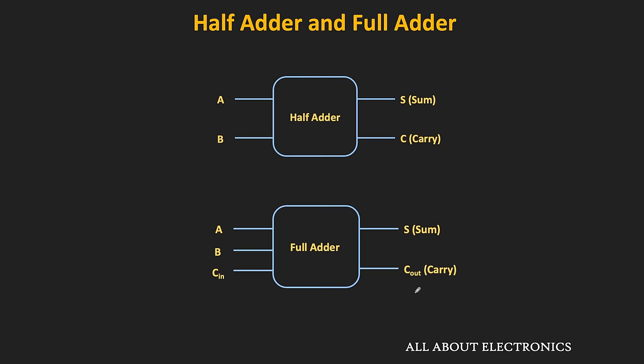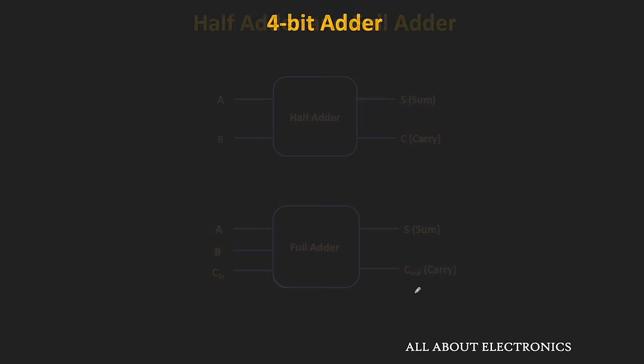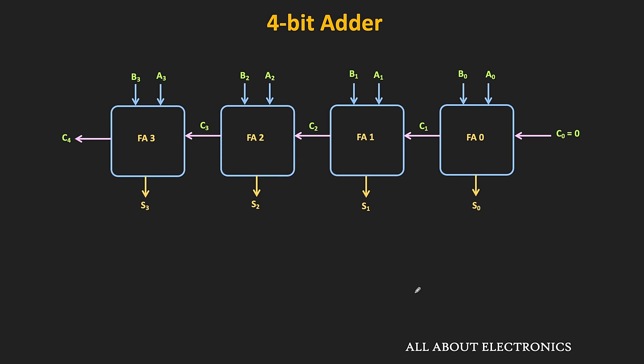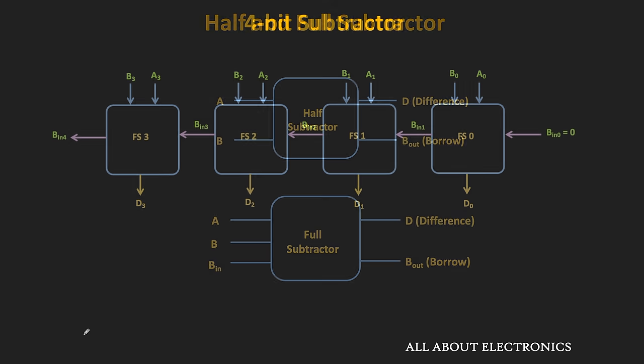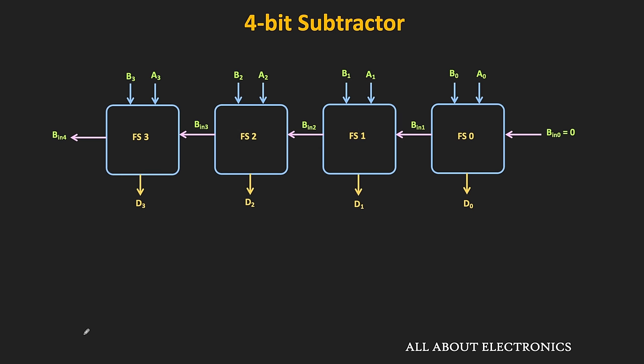In the earlier videos, we already learned about the half adder and the full adder. We have seen that by cascading 4 such full adder blocks, we can easily design the 4-bit adder. After that, we also saw the circuit for the half subtractor and the full subtractor. Similar to the adder circuit, by cascading n such full subtractor blocks, we can easily design the n-bit subtractor. Here, the design of the 4-bit subtractor is shown.